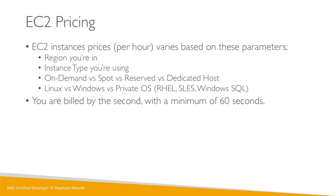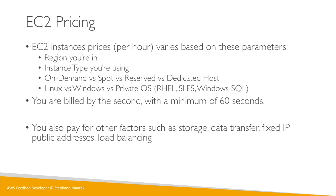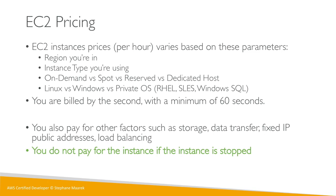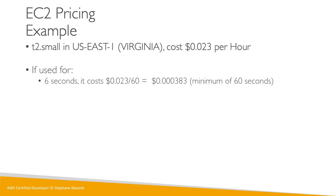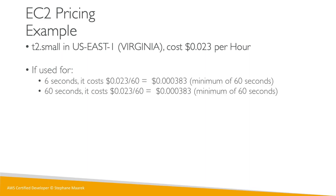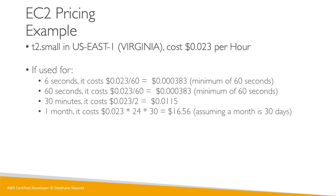You'll also pay for other factors such as storage, data transfer, fixed/public IPs, and load balancing — there's a lot that goes into EC2 pricing. You do not pay for the instance if it is stopped. For example, a T2 small in US East 1 costs $0.023 per hour. If you use it for six seconds it's rounded to the 60-second minimum; for half an hour you pay for that half hour; and for one full month (assuming 30 days) it comes out to $16.56.